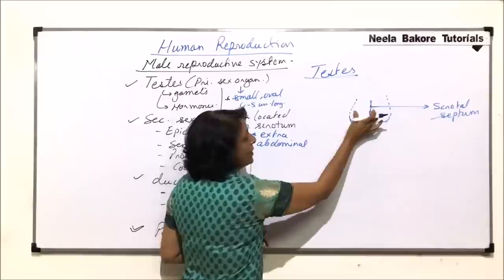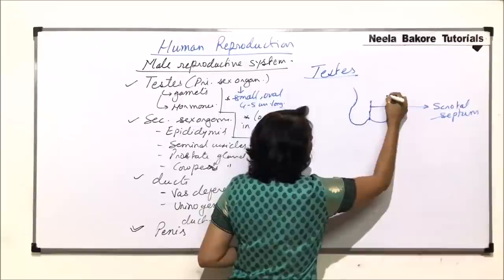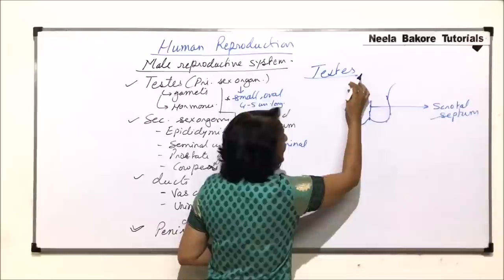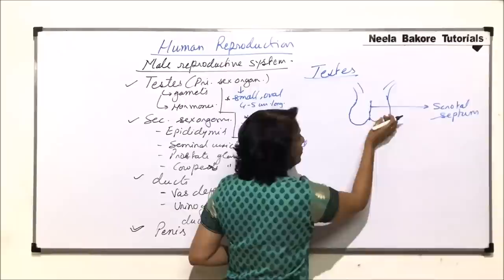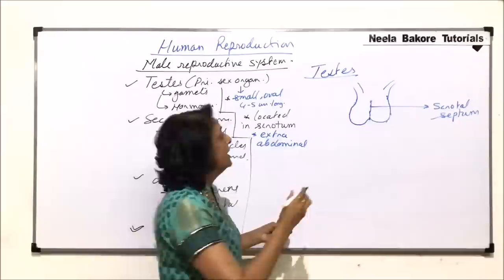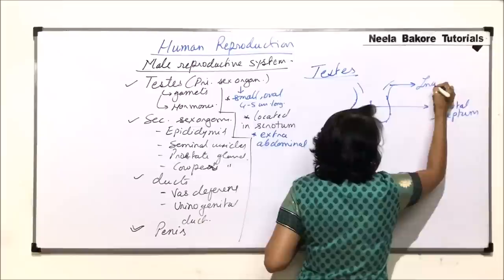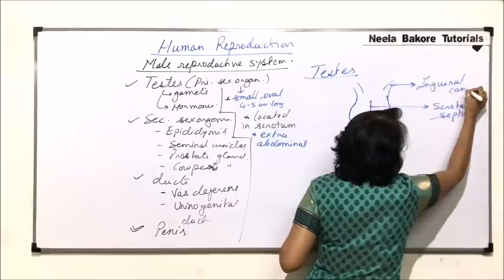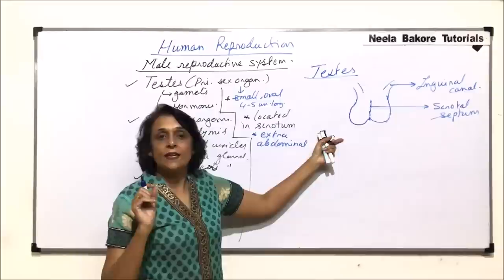Because the testes are outside the abdominal cavity, there are connections linking them to the abdominal cavity. These canals or connections are known as inguinal canals. The inguinal canal is a connection between the scrotal sac cavity and the abdominal cavity.